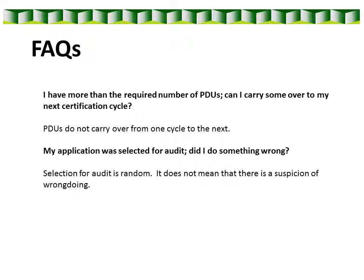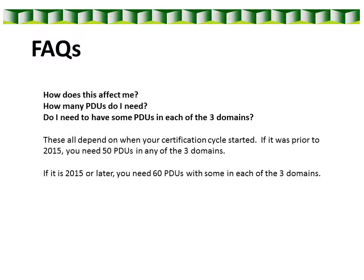If you have more than enough PDUs in one cycle, you cannot carry them over to the next cycle. Being selected for the audit is not an indication that there is suspicion about an application — the audit is random and completely computer generated. To summarize: the start date of your certification cycle determines which rules you follow. If you certify or recertify in 2015 or later, you follow the new rules — 60 PDUs with some in each of the domains. If you certified or recertified prior to 2015, you follow the old rules for this cycle — 50 PDUs in any of the three domains — and then must follow the new requirements next time you recertify.